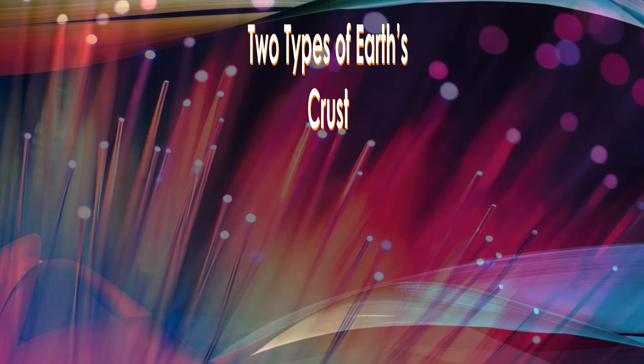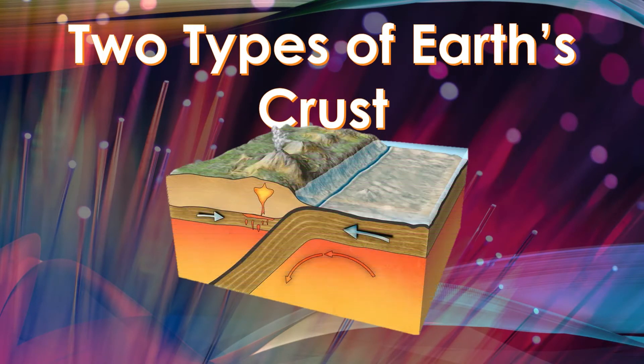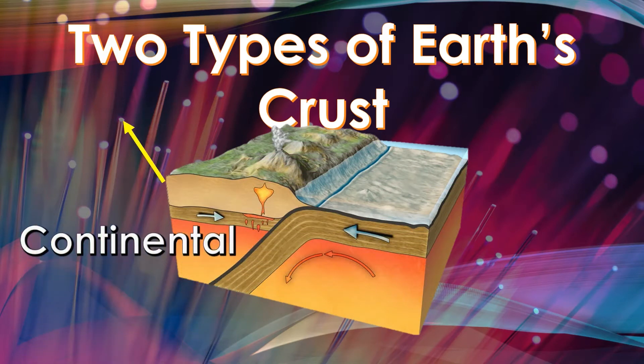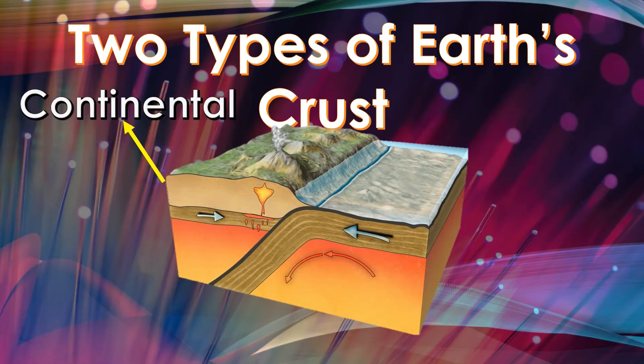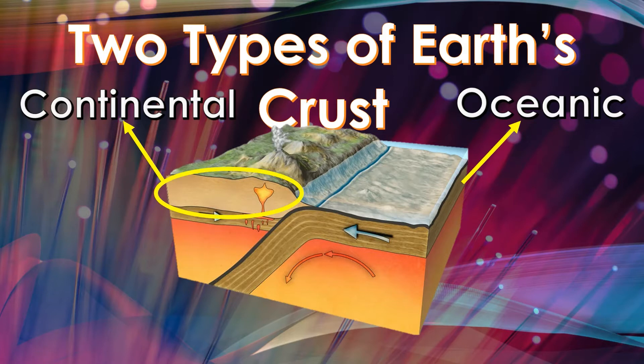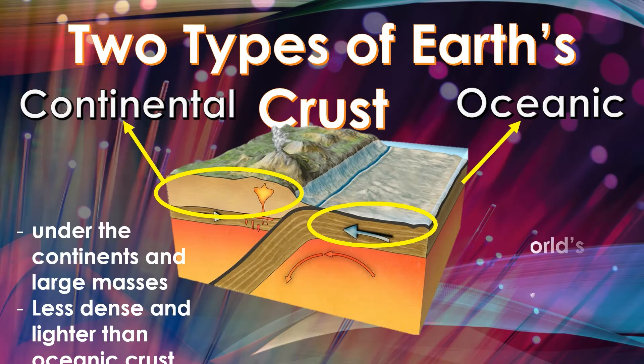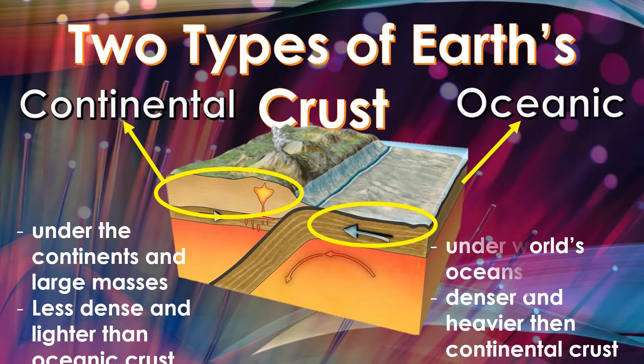There are two types of crust. The first one is what we call continental, and the other one is oceanic. Continental is that under the continents and other large land masses like Greenland and Madagascar. The other one is under the world's oceans. Continental is said to be less dense and lighter than the oceanic crust, while the other one is said to be denser and heavier than the continental.